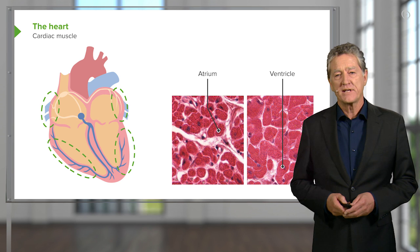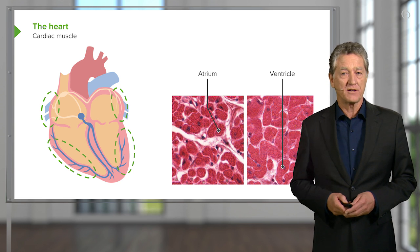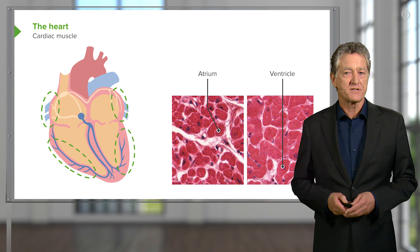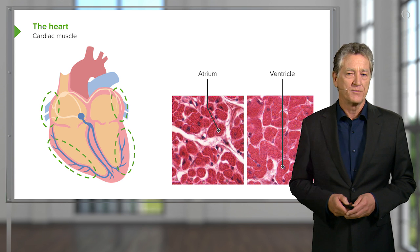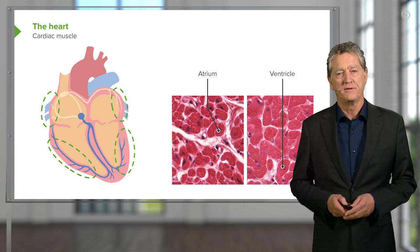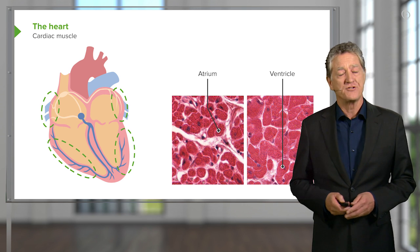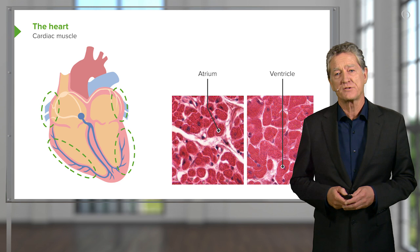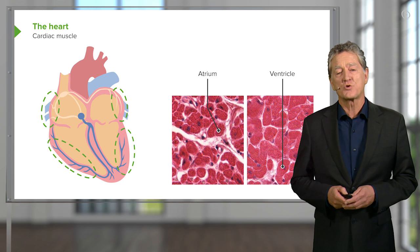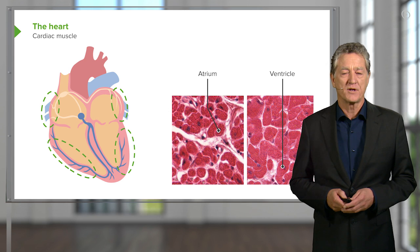So you can see subtle differences in the size of cardiac muscles when you compare the atria with the ventricle. In summary, it refers to the strength of the pump needed to pump blood from those two chambers.